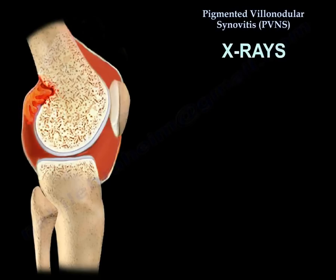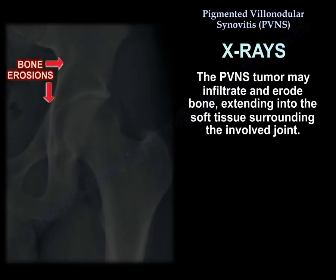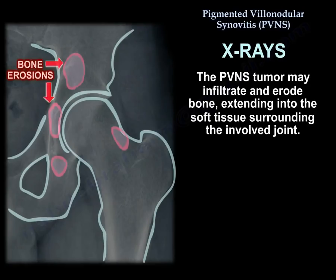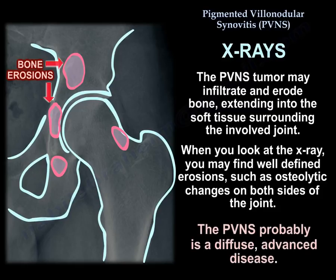Regarding x-rays, the tumor may infiltrate and erode bone and extend into the soft tissue surrounding the involved joint. On x-ray, you may find well-defined erosions — osteolytic changes on both sides of the joint — which probably indicates diffuse advanced disease.